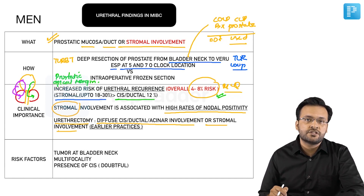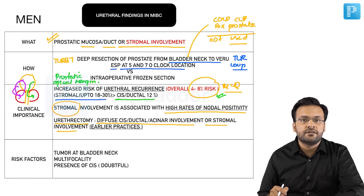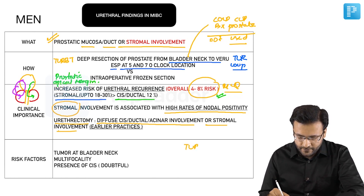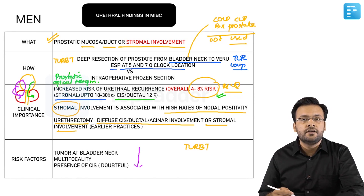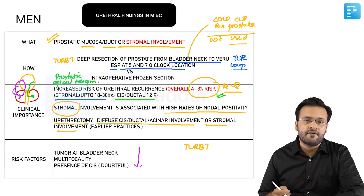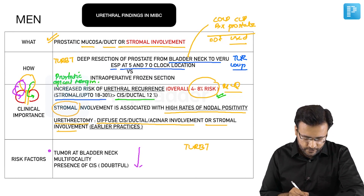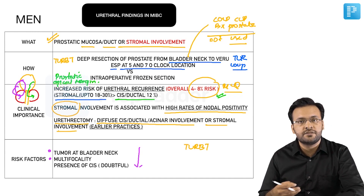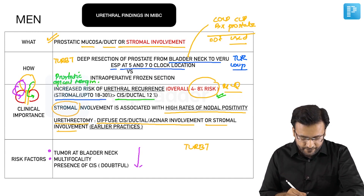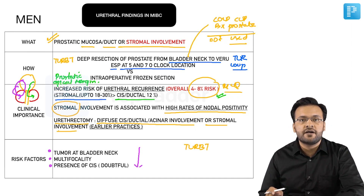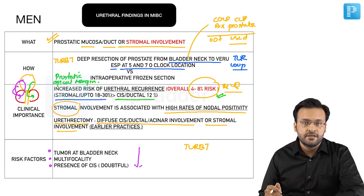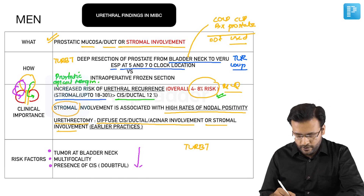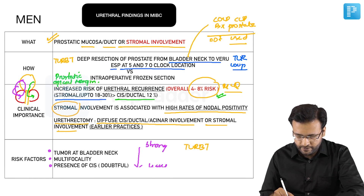In terms of which patients you should suspect for prostatic urethral evaluation at the time of TURBT, there are a few risk factors in order of importance: tumors involving the bladder neck have the highest propensity to involve the prostatic urethra; multifocality is another risk factor, which is a property of carcinoma in situ; and finally, the presence of CIS has been shown to be a risk factor in some studies, though other studies have negated this. These should be answered in this priority order, with bladder neck involvement being the strongest factor.